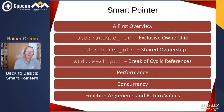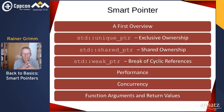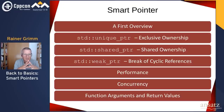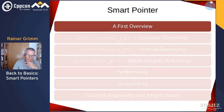Here is the overview of my talk. I'll cover the classical three smart pointers we have in C++11: unique pointer, shared pointer, and weak pointer. Then I'll talk about special aspects such as performance and concurrency. In particular, shared pointer is extremely comfortable in concurrent environments. At the end, I'll discuss how to pass a smart pointer or argument to a function and how a function should return its value.